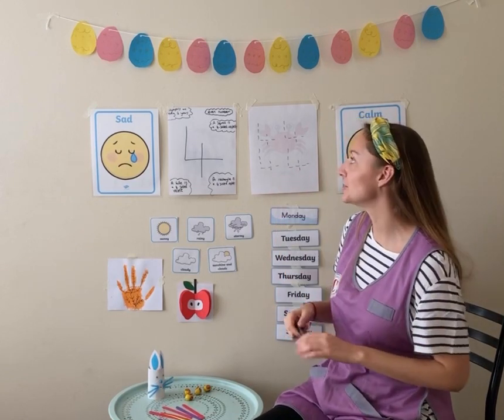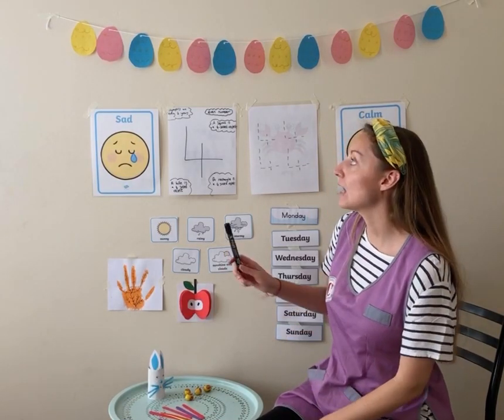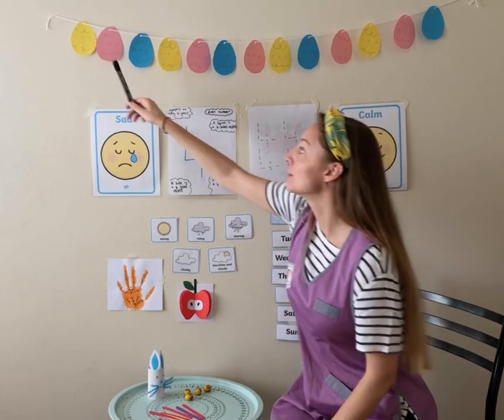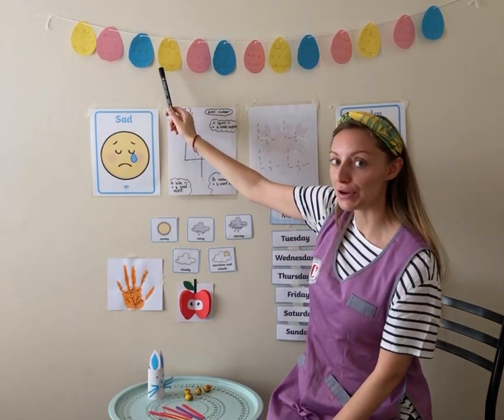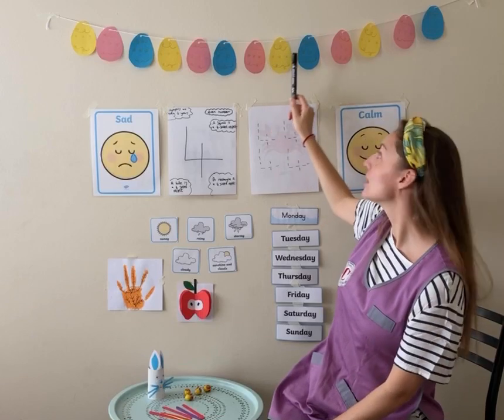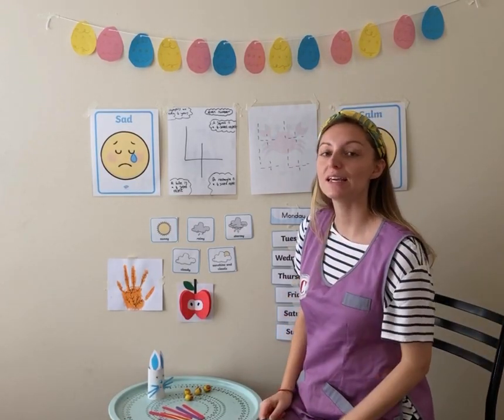Very good. So, to start with, let's practice counting. Who can help me count all of the yellow Easter eggs? Let's have a look. 1, 2, 3, 4. There are 4 yellow Easter eggs.